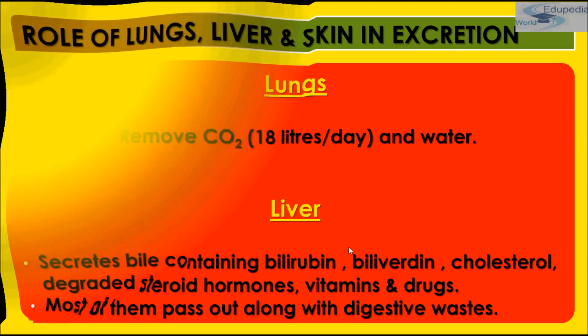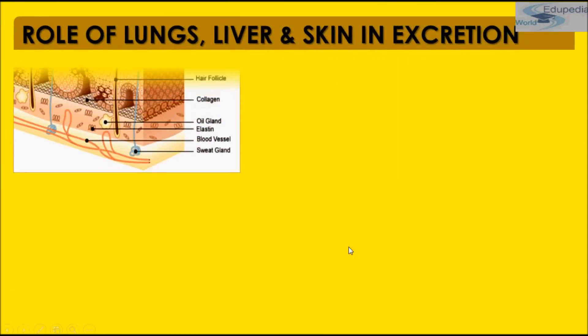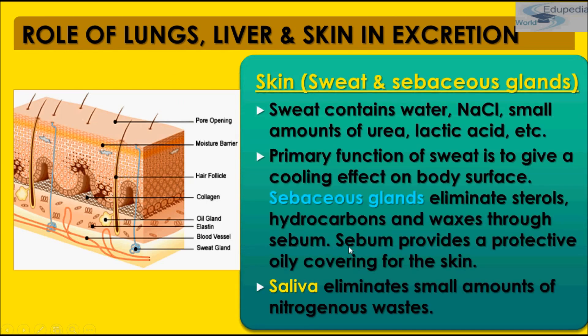Now coming to the skin. Skin in mammals acts as an excretory organ. It secretes water, salt, and some urea. This excretion is in the form of perspiration, which is sweat. Skin is made up of two layers: the epidermis and the dermis.